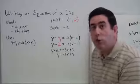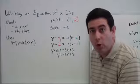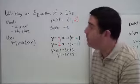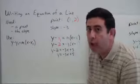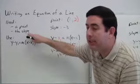If you want to write an equation of a line, there are a couple of things that you have to have. First, you have to have a point. Just one will do. Second, you need the slope.